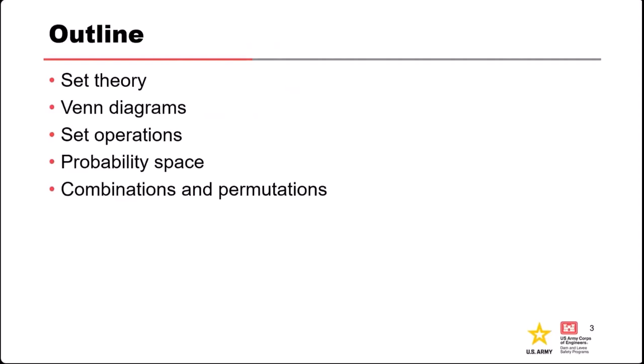As an outline, we're going to cover a rough introduction to set theory, a little bit about Venn diagrams, a little bit about set operations that help us relate events to each other, and then we'll transition into how that relates to things in the space of probability, and then wrap up with some overview and examples on combinations and permutations.